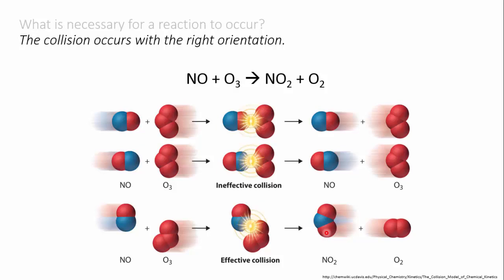So you can see that an NO and an O3 could collide many times before just by chance they happen upon the correct orientation. And it's that word chance that turns out to be the key to understanding reaction rates.